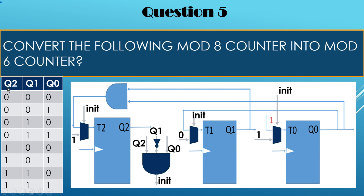When Q2, Q1, Q0 are 1, 0, 1 — init goes high, and the next state should be 0, 0, 0. Using T flip-flops: Q2 is 1 and must go to 0, so T2 is set to 1 to toggle it. Q1 is already 0 and stays 0, so T1 is set to 0 — no toggle needed. Q0 is 1 and must go to 0, so T0 is set to 1 to toggle it.